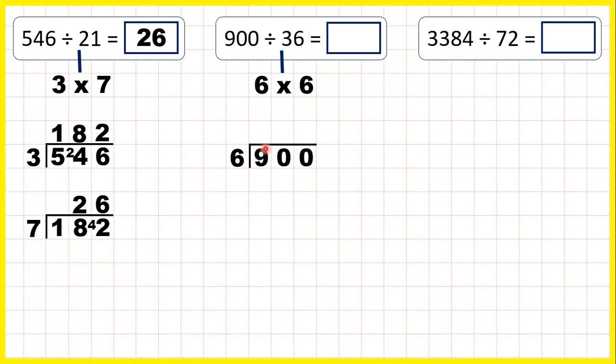9 divided by 6 is 1 remainder 3, 30 divided by 6 is 5, 0 divided by 6 is 0. So now we can take that answer, take the 150, and divide it by 6.